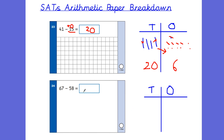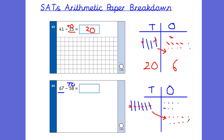Question 24: 67 minus 58. Make the big number: 67 is six 10s and seven 1s. Take away 5 tens — cross those out. Now we need to take away 8 ones, but only have 7. So borrow another 10 — cross it out and move it into the ones column, making 10 extra ones — now 17 ones total. Take away 8 ones. We're left with no tens and 9 ones, so the answer is 9.